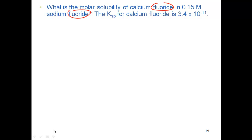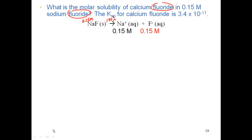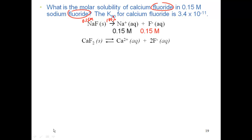We'll handle this the same way as the buffer problem. We take the soluble salt and dissociate it first: 0.15 molarity sodium fluoride breaks up 100%, giving 0.15 molarity sodium and 0.15 molarity fluoride. Then, similar to how we handled the acid hydrolysis in a buffer, we take the dissociation of the insoluble salt next — calcium fluoride breaking up into calcium ions and fluoride ions. We have to account for that excess 0.15 M fluoride shifting the equilibrium to the left.